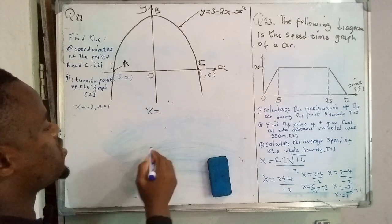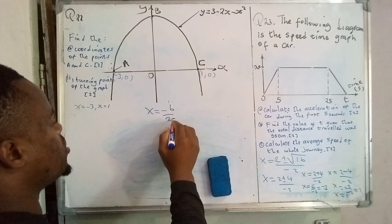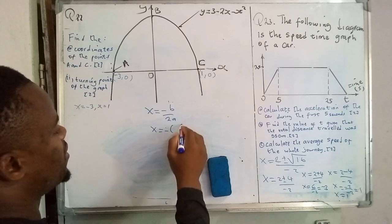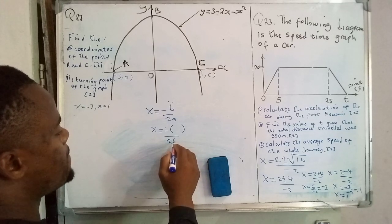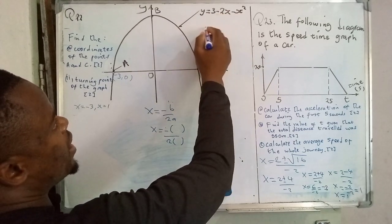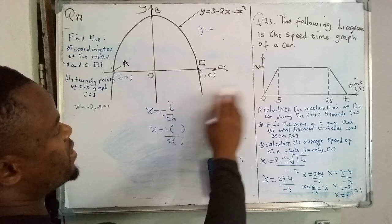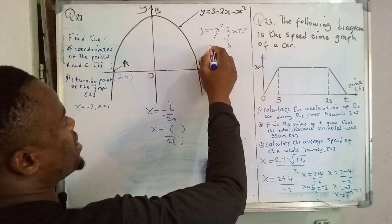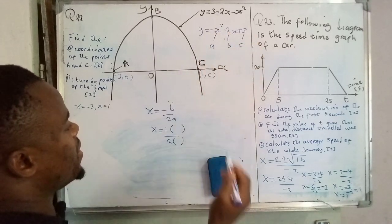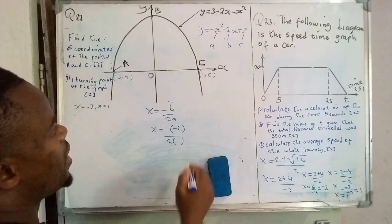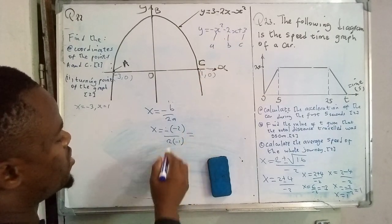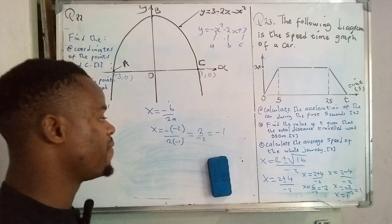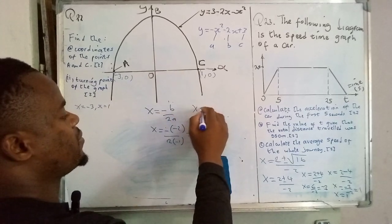To determine the x-coordinate of the turning point, we use the formula x = −b / 2a. The function in standard form is −x² − 2x + 3, where b = −2 and a = −1. So x = −(−2) / (2 × −1) = 2 / −2 = −1. The x-coordinate is −1.